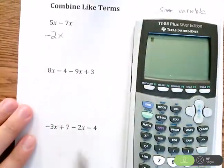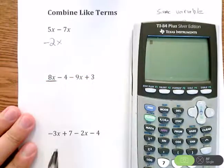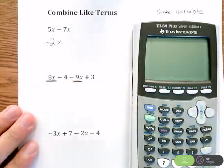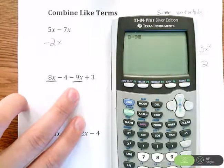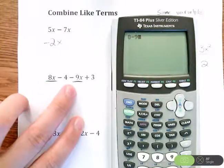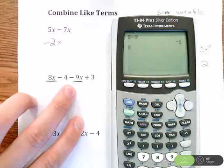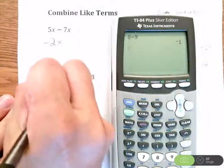So I want to look at - we're gonna go slow and steady through this and combine like terms. I have a term with an x here, I have a term with an x there. Let's just start with that and do 8 minus 9.